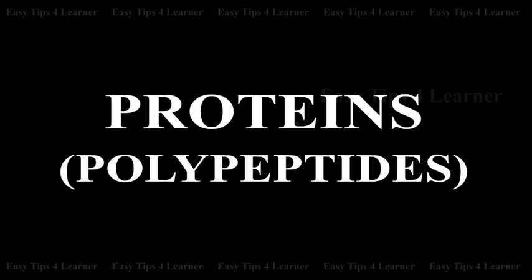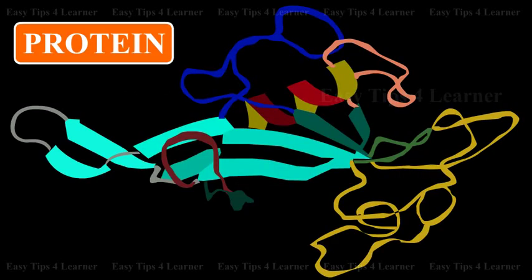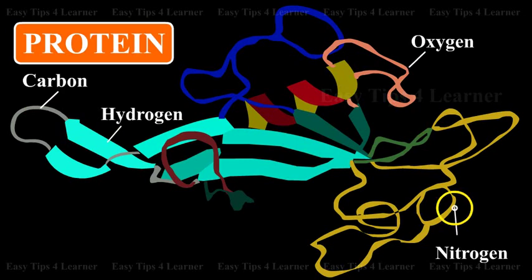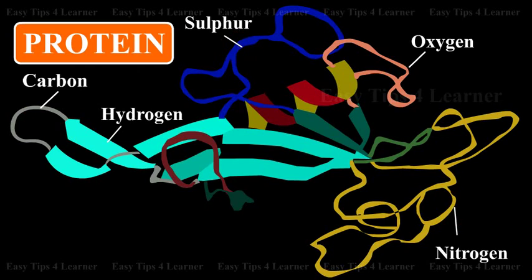Proteins, also called polypeptides, are nitrogenous compounds made up of carbon, hydrogen, oxygen, and nitrogen. Proteins also contain sulfur.